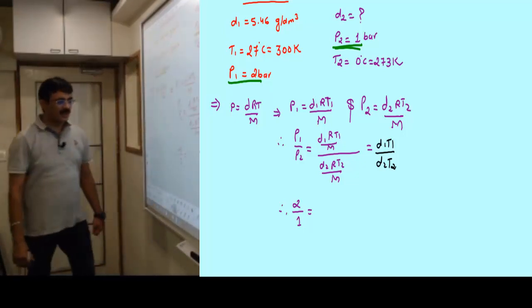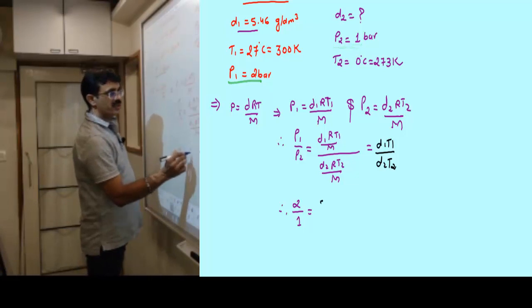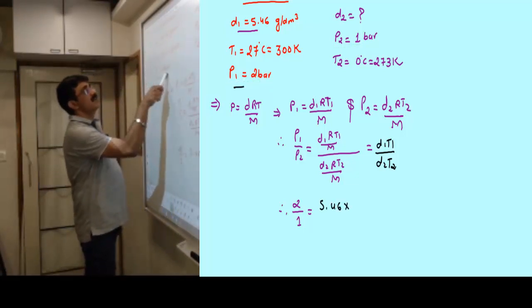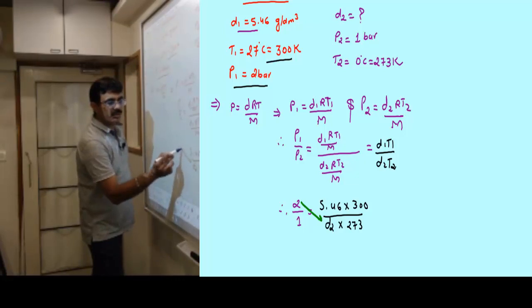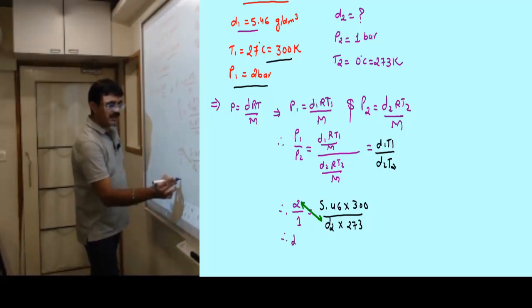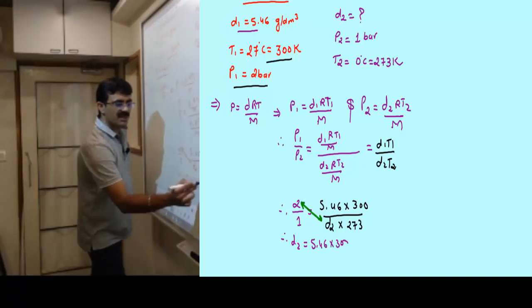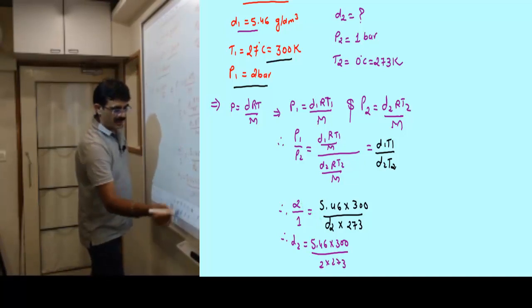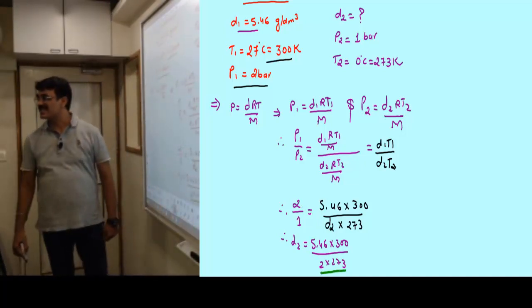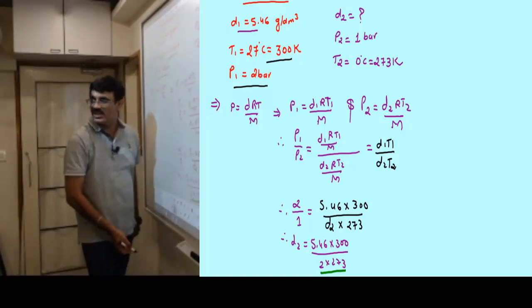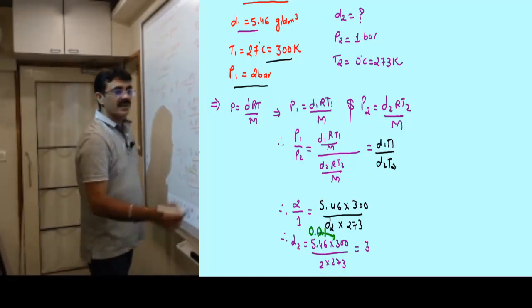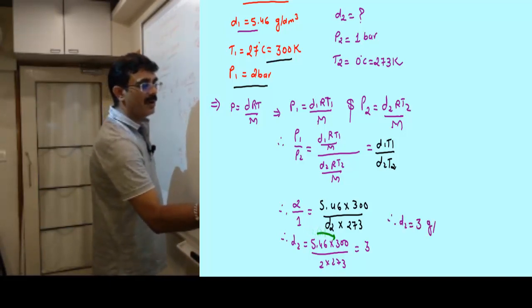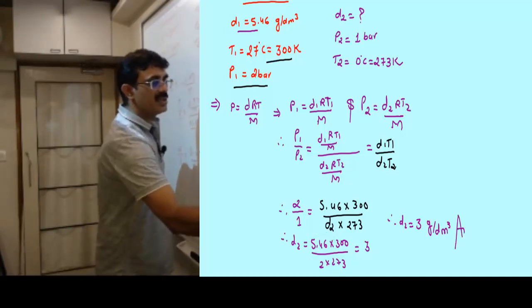I will exchange these. Therefore D2 equals... I don't think we need calculator here. Because 2 into 273 into 5.46 divided by 1 into 300. This becomes 546 upon 300, which is 1.82. Multiply by 3, no wait: 2 times 273 is 546, divided by 300 gives 1.82. The final answer is D2 equals 3 gram per decimeter cube.